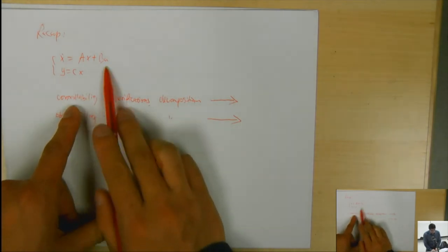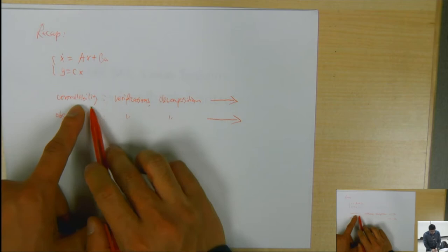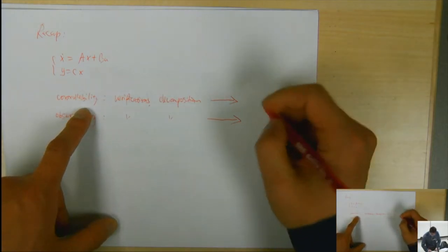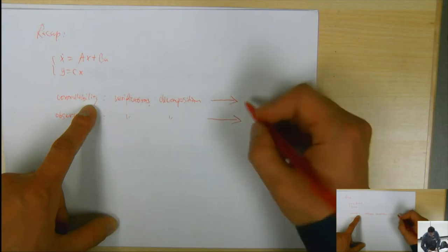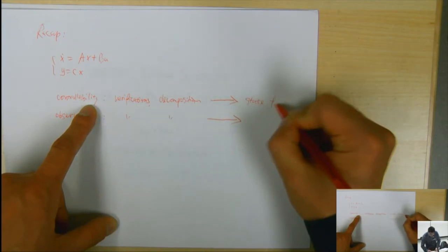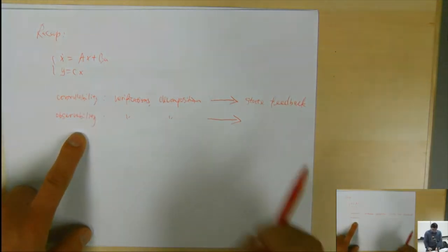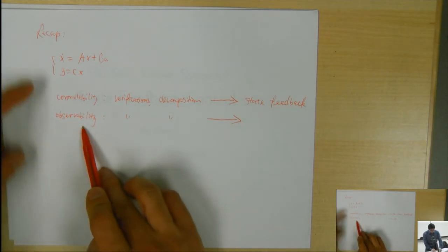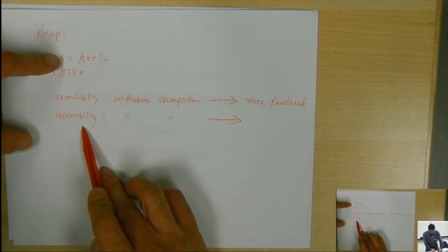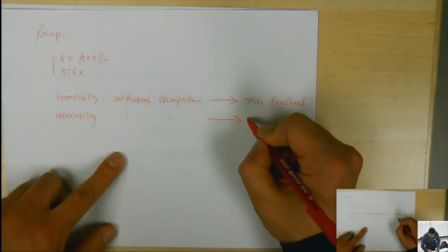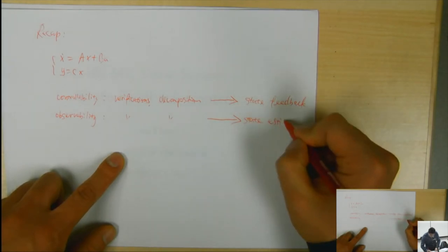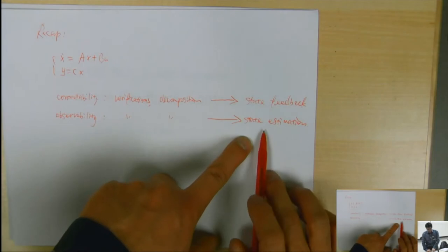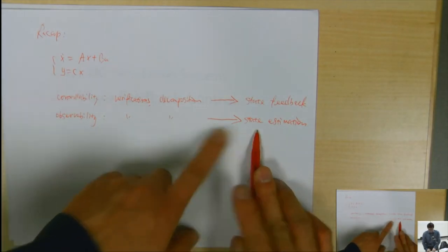If a system is controllable, we're going to see today how it turns out to be very easy to control. Controllability directly relates to the concept of state feedback control. And for the observability case, if the system is observable, we will be able to infer the state from the measurement — that relates to state estimation. These two parts contribute to the main theme of modern control theory: state feedback and state estimation.